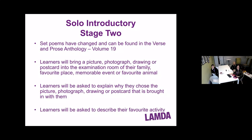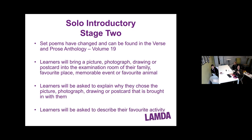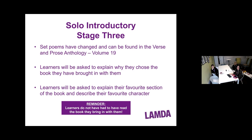I'll run over these changes. For Stage 1, nothing has changed — we've just added an extra requirement for learners to describe the rules of a game. Stage 2: learners will be asked to describe their favorite activity, whether that's playing a game, roller skating, or whatever they want to talk about. Stage 3: learners are required to bring in the book and will be asked to explain their favorite section and describe their favorite character. They don't have to have read the book — they just bring it with them.